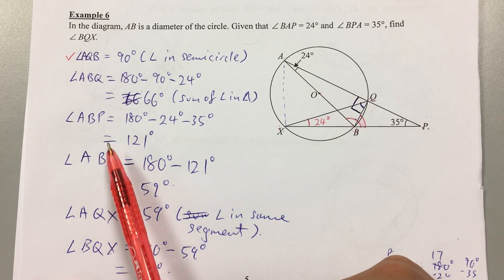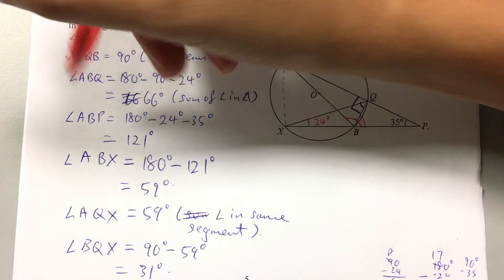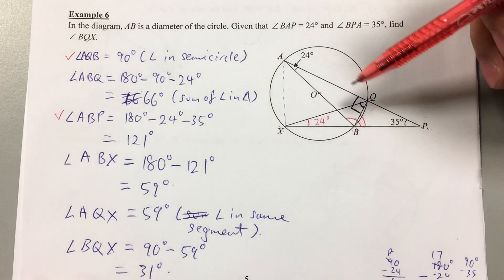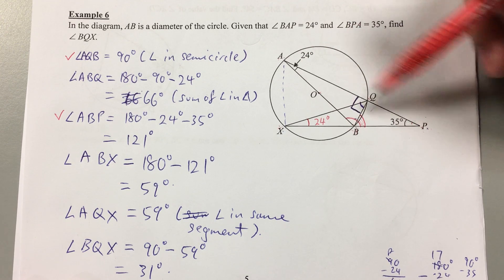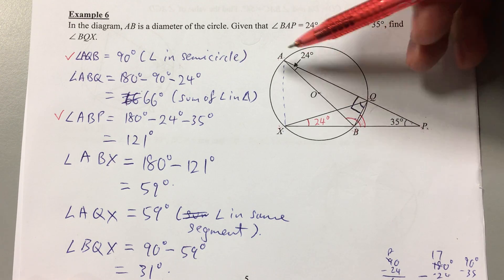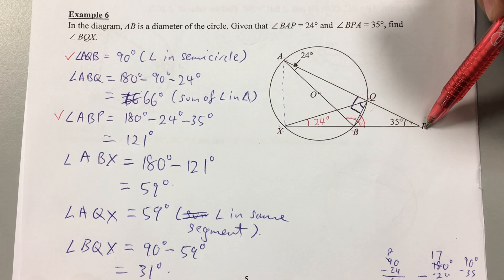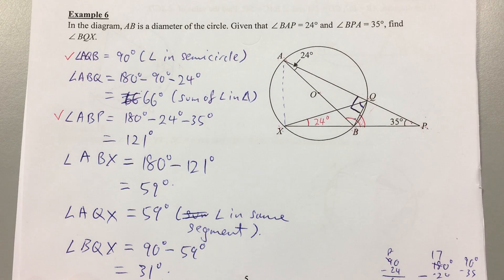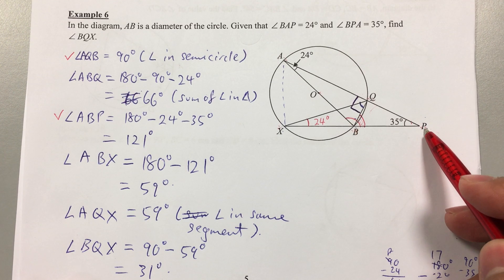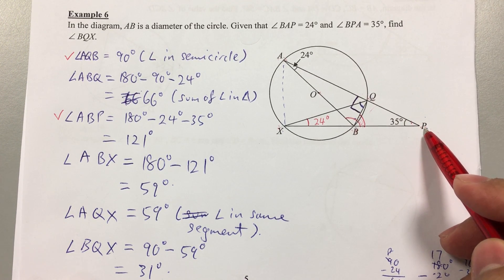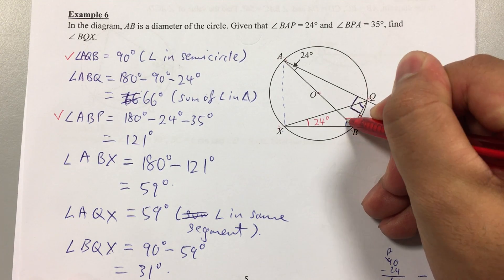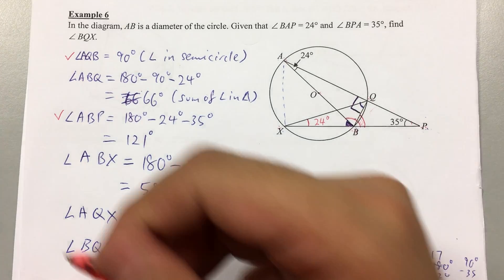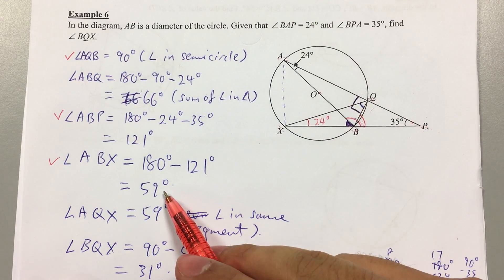Look at triangle ABP — this big triangle. We already know two of the angles: 24 degrees and 25 degrees. If I can figure out angle ABP, it might be useful. I worked it out and found it is 121 degrees. This is important because XBP is a straight line, and the angle on a straight line is 180 degrees. So angle ABX is 180 degrees minus 121 degrees, which gives 59 degrees.